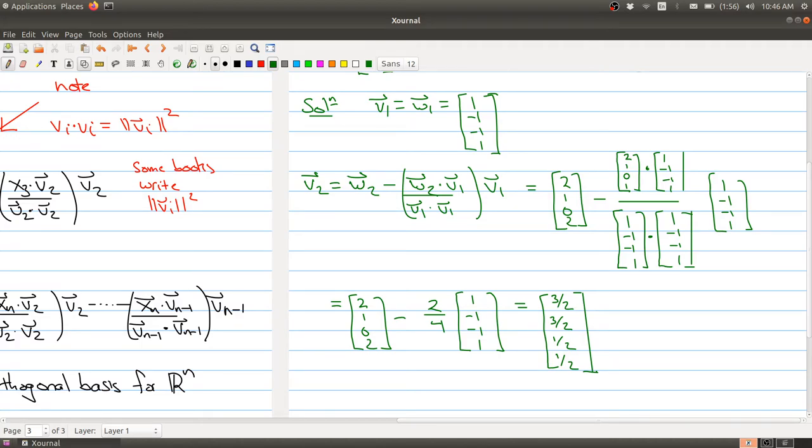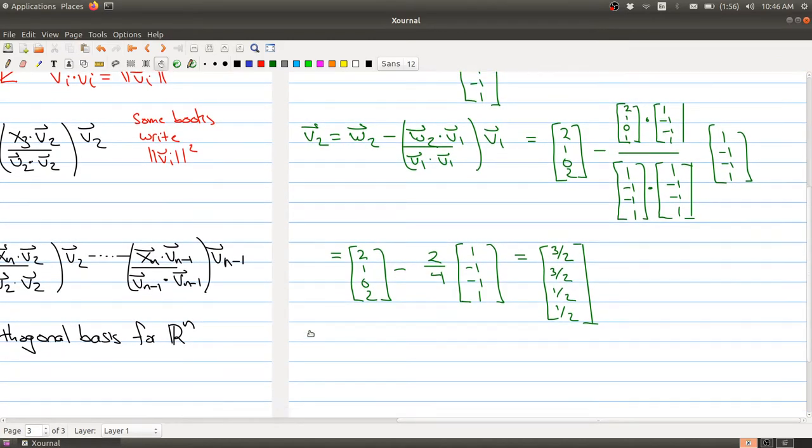And you can pause here for a minute and just take a second and say, okay, v1 and v2 should be orthogonal to each other. Are these two vectors orthogonal to each other? So quickly do a dot product in your head. So here we have 1 times 3/2 plus minus 3/2 minus 1/2 plus 1/2. If you add all that up in your head, you're going to get 0. Okay, so we have two vectors that are orthogonal. So we're off to a good start. And we checked it.